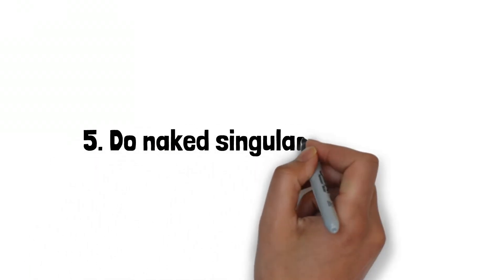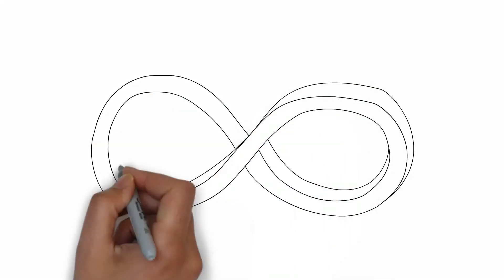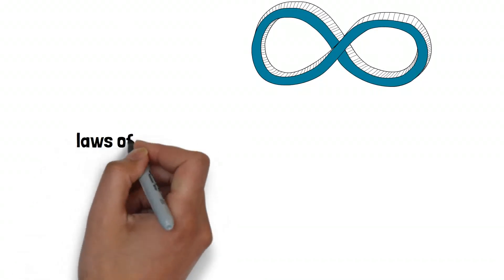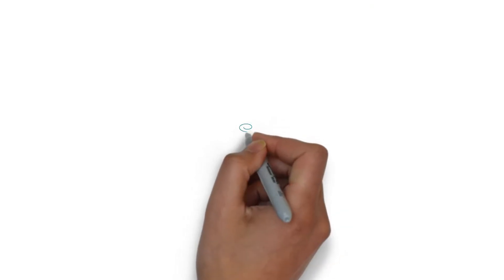Number 5. Do naked singularities exist? A singularity occurs when some property of a thing is infinite, and so the laws of physics as we know them break down. At the center of black holes lies a point that is infinitely teensy and dense—a point called a singularity.